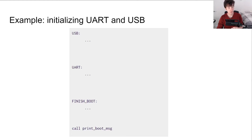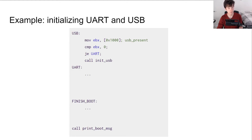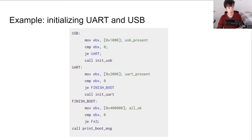Here is a small piece of firmware whose initialization process consists of initializing a USB device and a UART device. A sensible boot point to target with JetSet would be the call to the print boot message function on the final line. First, the firmware checks that the USB device is present by reading from one of its device registers, and if it is, it calls the initUSB function. Then it repeats the process for the UART. Finally, it checks the all-ok variable in RAM to make sure the boot succeeded, and if it did, it calls printBootMessage; otherwise, it jumps to the failure case.